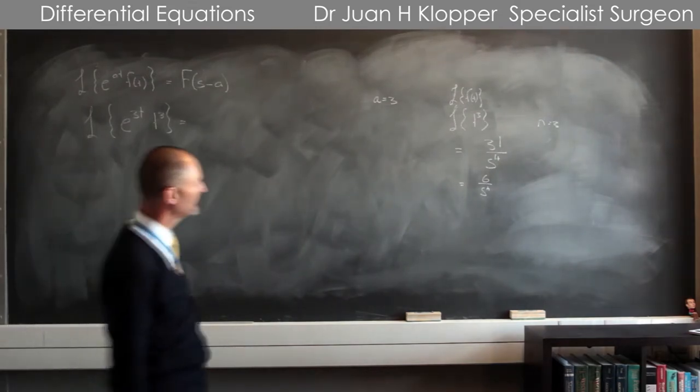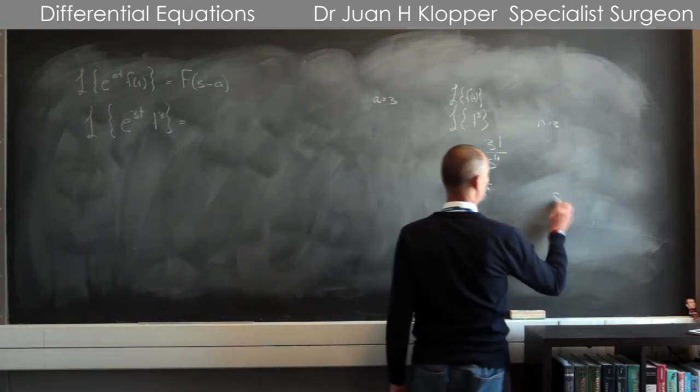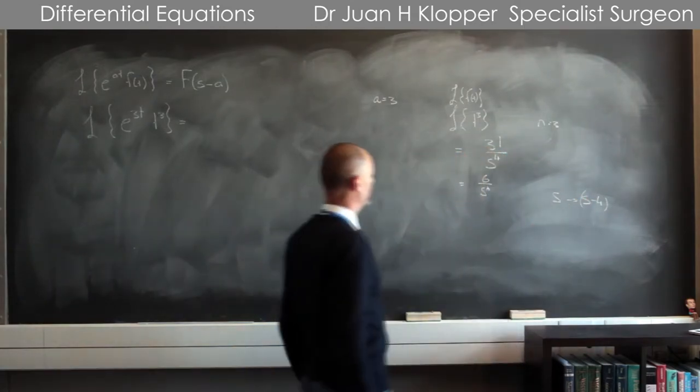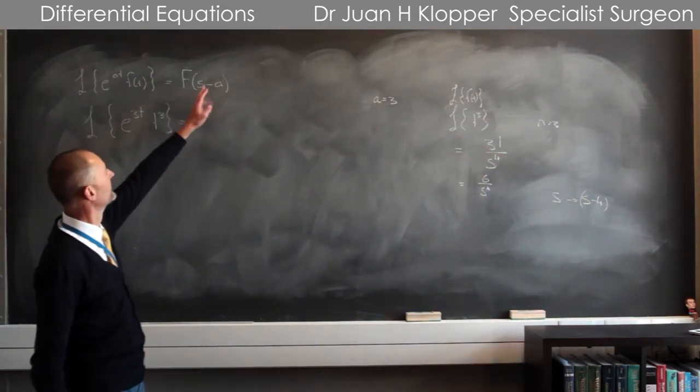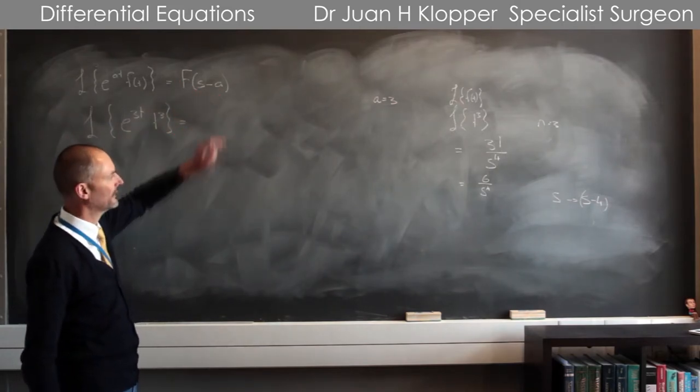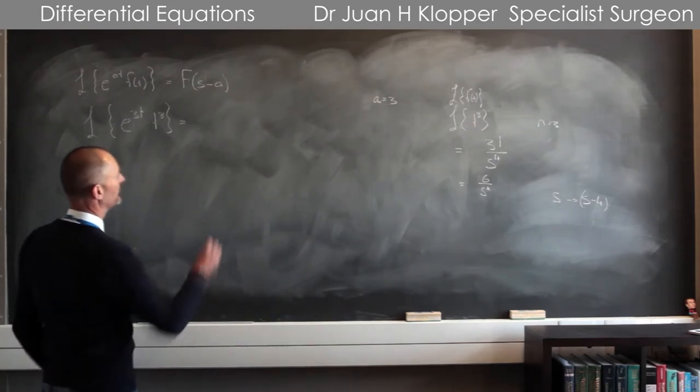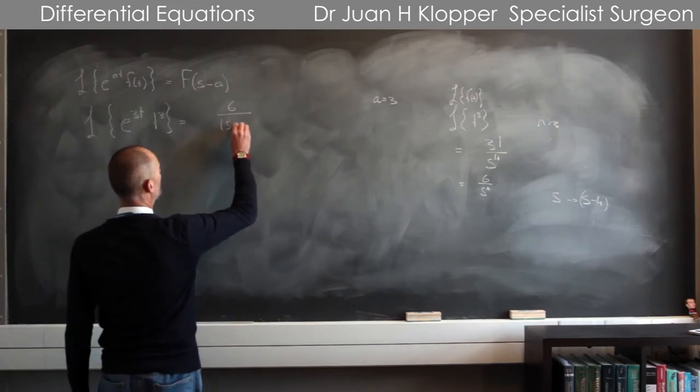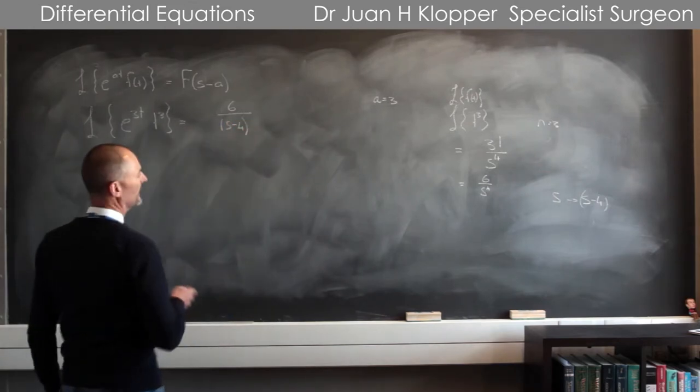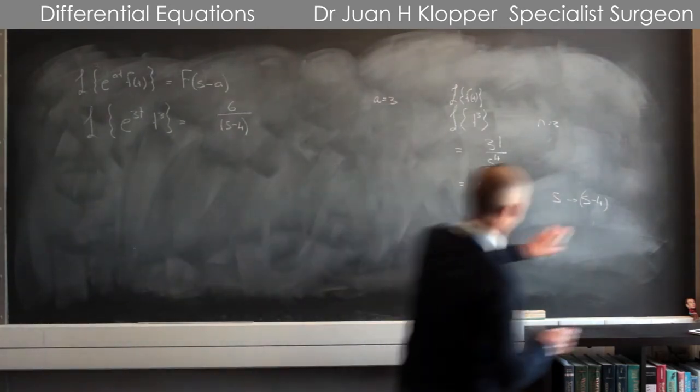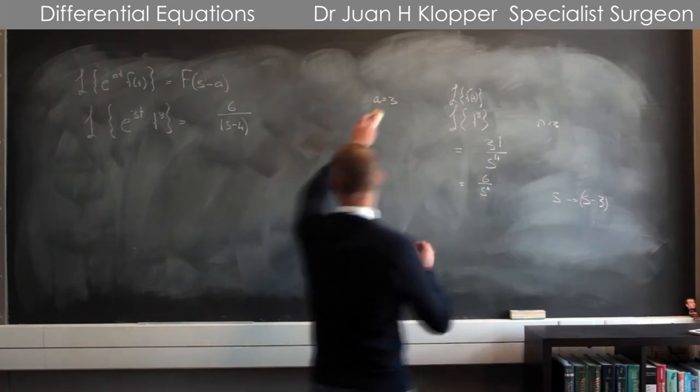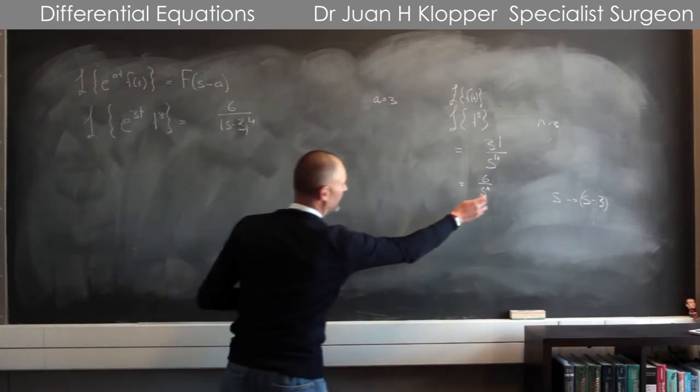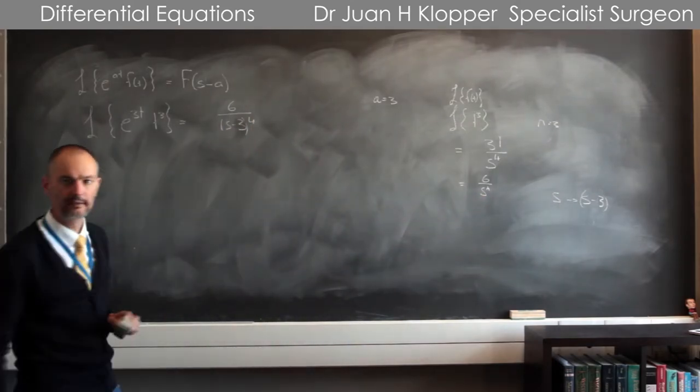So everywhere where I had the s, everywhere where I have s, I just have to replace that with s minus a. So the Laplace transform of this whole thing is now going to be 6 over, and in place of s, I'm going to have s minus a. So a was 3, I have s minus 3 to the power 4, so just instead of that s, I now have s minus a, which is s minus 3 to the power 4.